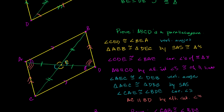And we're done. We've just proven that if the diagonals bisect each other — if we start with that as a given — then the opposite sides of this quadrilateral must be parallel, meaning that ABCD is a parallelogram.